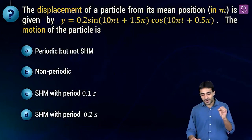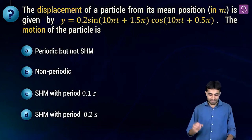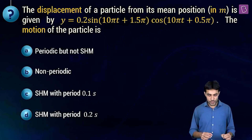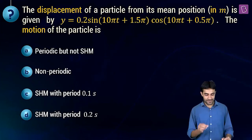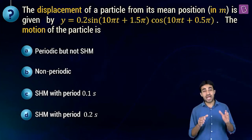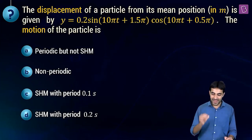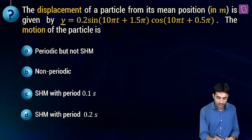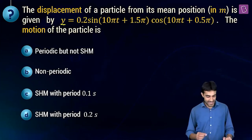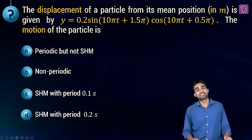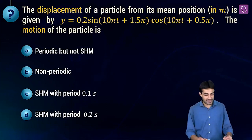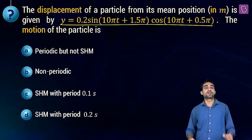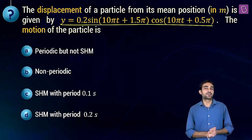The displacement of a particle from its mean position is given by y = 0.2 times sine of 10πt plus 1.5π, times cosine of 10πt plus 0.5π. This is displacement y as a function of time. The motion of the particle is — just by looking at this equation, we have to comment on the motion of the particle, whether it is simple harmonic motion or not.